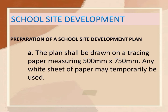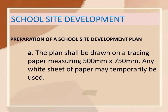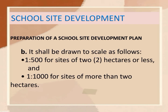Let us proceed to the preparation of a school site development plan. The plan shall be drawn on a tracing paper measuring 500 mm by 750 mm. Any white sheet of paper may contemporarily be used. It shall be drawn to scale as follows: 1 to 500 for sites of 2 hectares or less, and 1 to 1,000 for sites of more than 2 hectares.